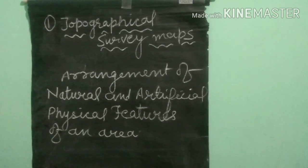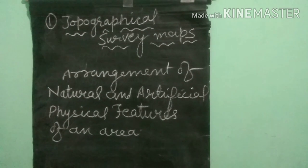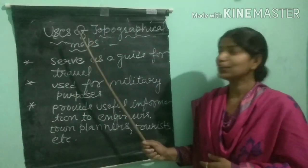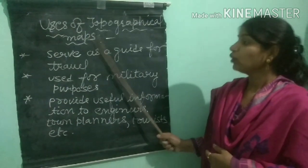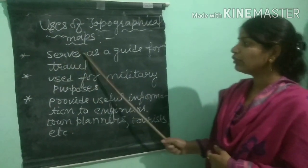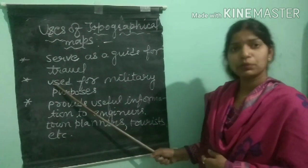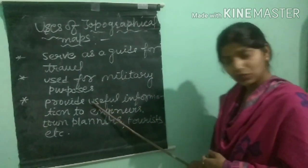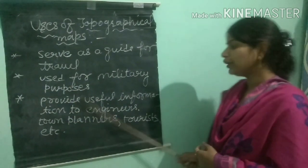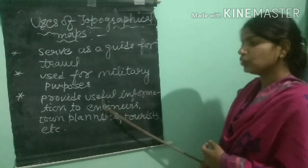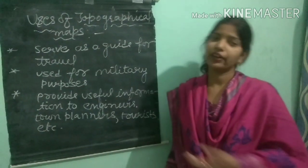Now we shall do the uses of topographical maps. Topographical maps serve as a guide for travel, and these maps are used for military purposes also. These maps provide useful information to engineers, town planners, tourists, geographers, etc.